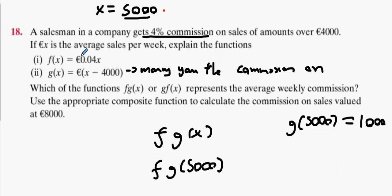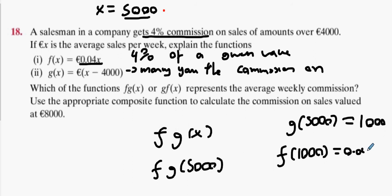Okay, what does this function represent? It represents 4% of a given value. So after we do g(5000), we're now going to put that into the f function. So it's going to be f(1000), and what is f(1000)? f(1000) is 0.04 of 1000, which is what we got earlier—we got €40.